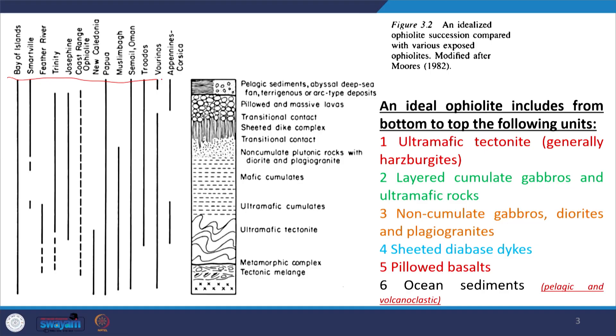Nowadays, if you go to most continental-continental collision zones — particularly in the Indian context, to the northern Indian plate boundary, the Indus-Suture zone — you will find ophiolite sequences exposed in many places. Let us discuss in detail what exactly the ophiolite is, when it is emplaced, when it is up-thrusted, what is its thickness, what is its compositional variation, and how it resembles the present-day ocean basin or oceanic lithospheric system. Here, some worldwide-studied ophiolite sequences are listed, starting from Bay of Islands to Troodos. This is the ophiolite sequence shown in diagrammatic representation based on all these studies.